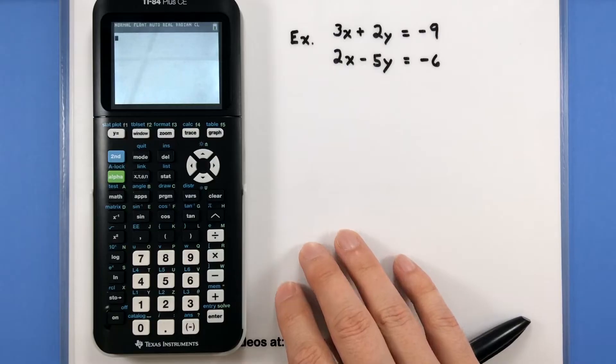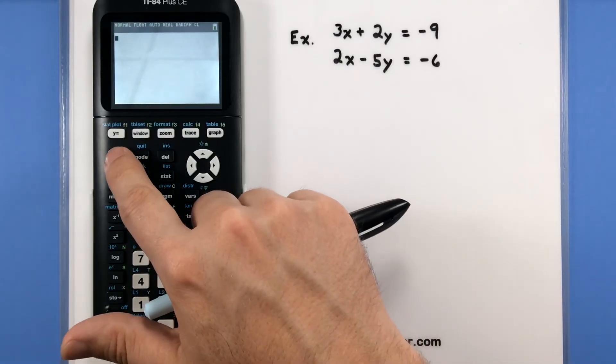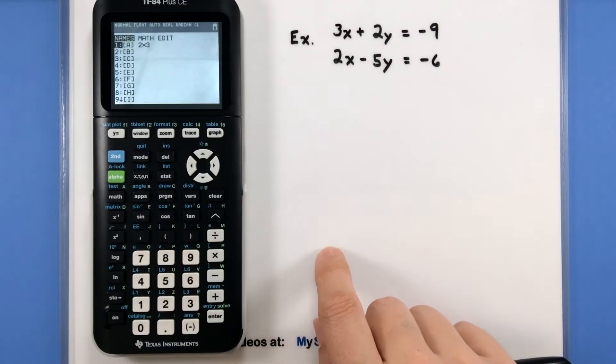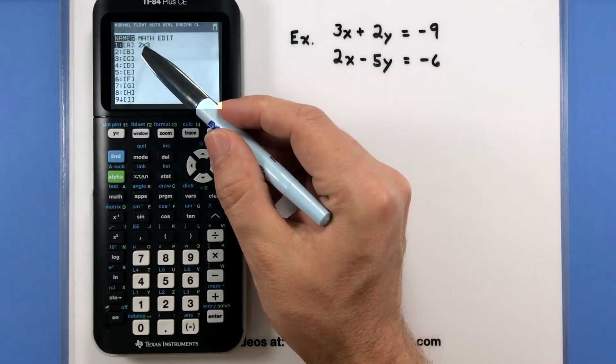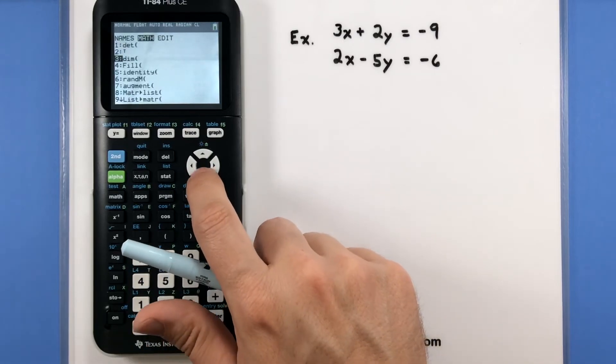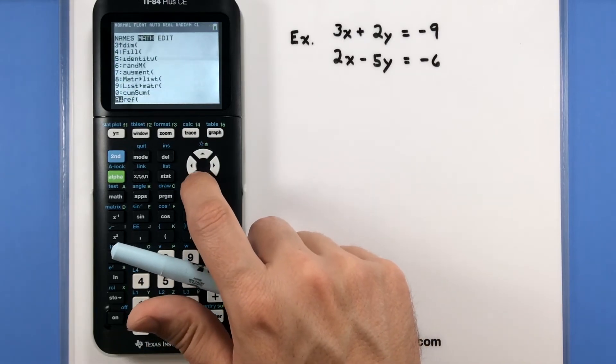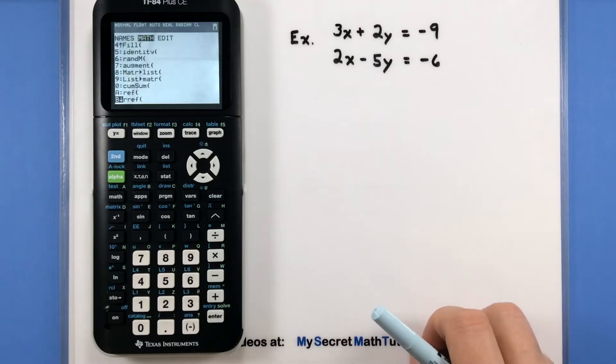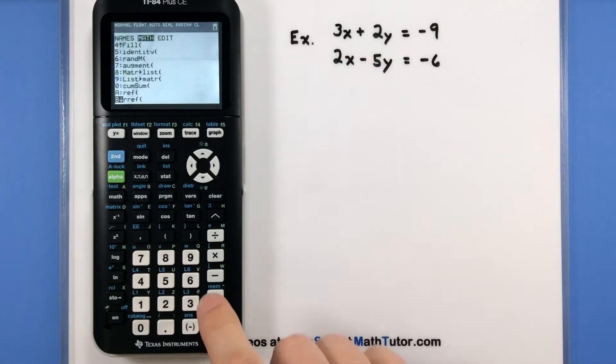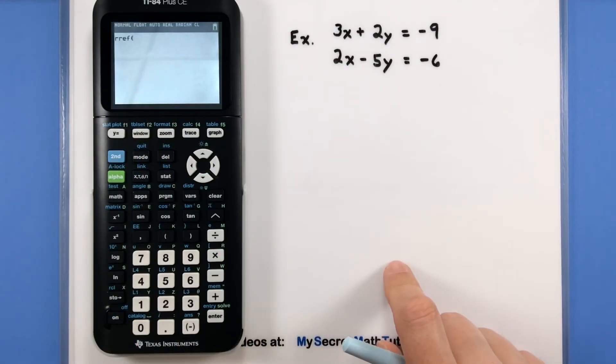Now let's go ahead and have the calculator reduce it or go through that solving process. We'll press second and matrix one more time. And this time we'll be scrolling over for the math option. Math. We'll go all the way down this list. I'm looking for RREF. It stands for Row Reduced Echelon Form, and it happens to be number B on my list.